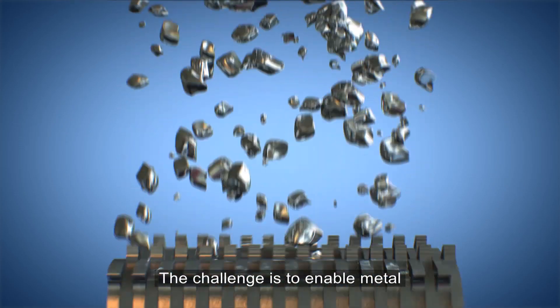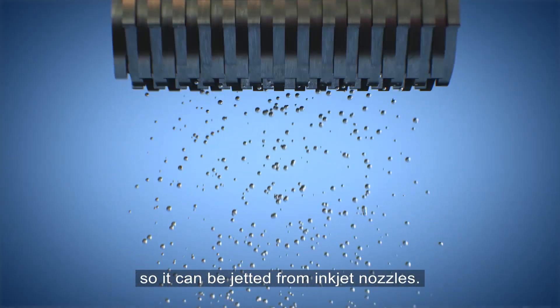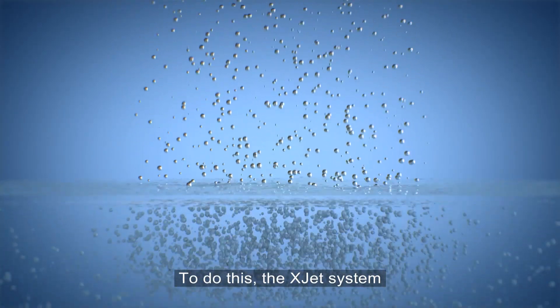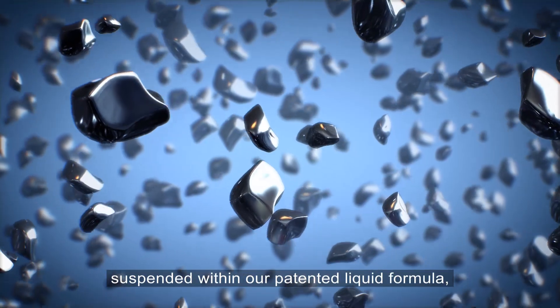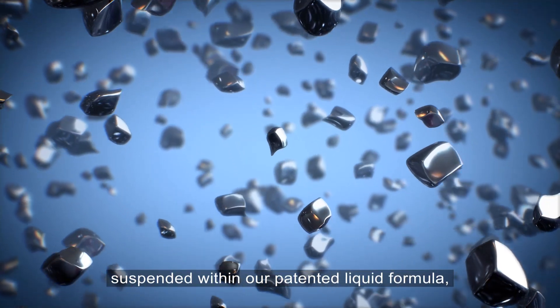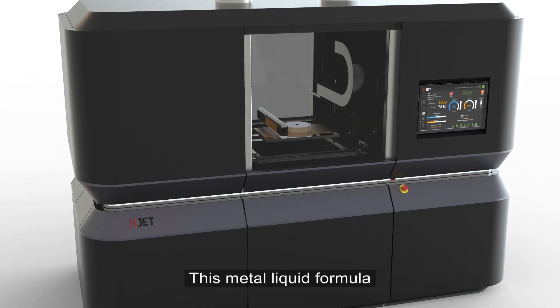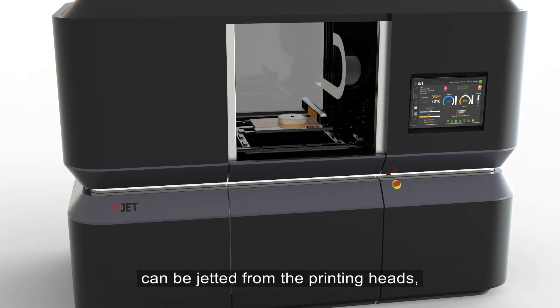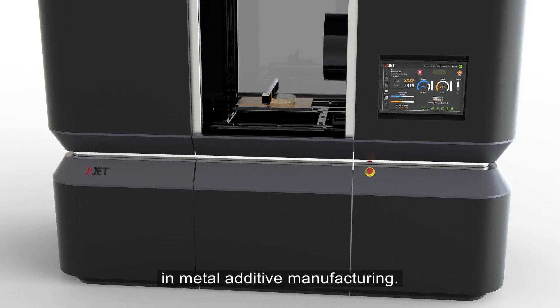The challenge is to enable metal to be deposited in a liquid form so it can be jetted from inkjet nozzles. To do this, the XJET system uses nano-sized particles suspended within our patented liquid formula, eliminating inefficient lasers. This metal liquid formula can be jetted from the printing heads, representing a revolution in metal additive manufacturing.